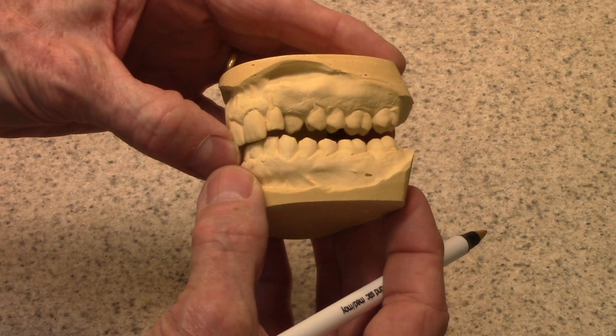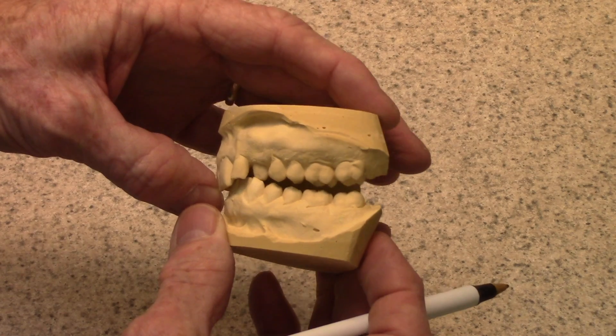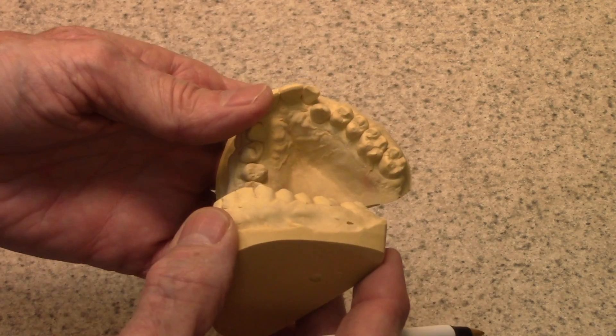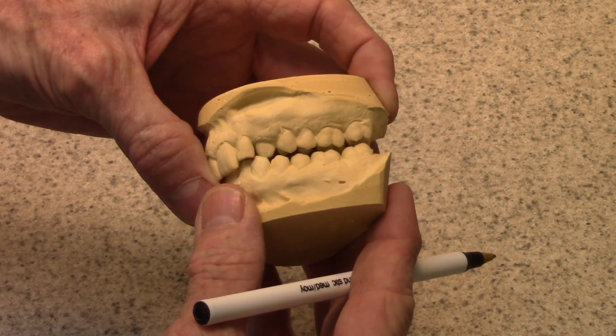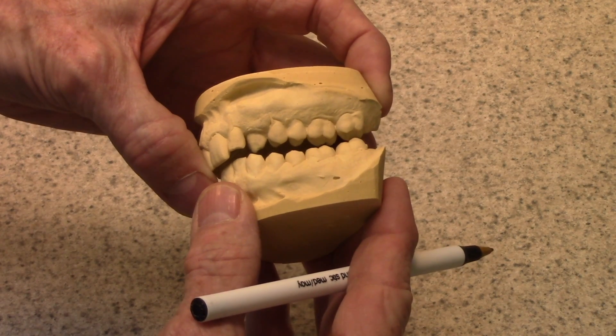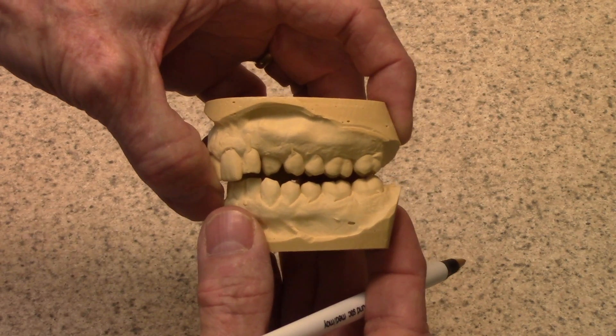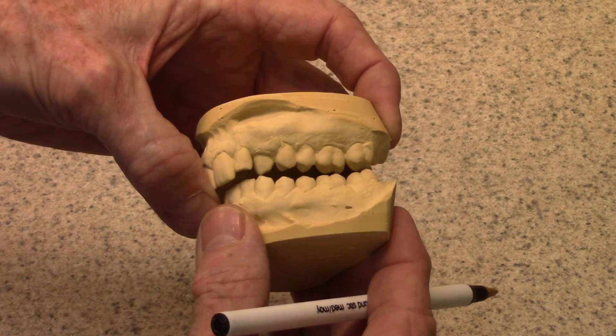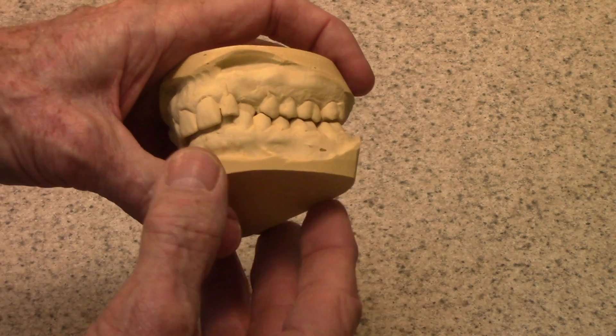That means every time the patient bites, the function of biting is going to resist the movement of the tooth. So, you can make bite opening devices either with a lingual anterior bite plane or a posterior bite plane to open up the bite to free it so that the tip of the cuspid is free to move out, and that would eliminate that functional resistance.